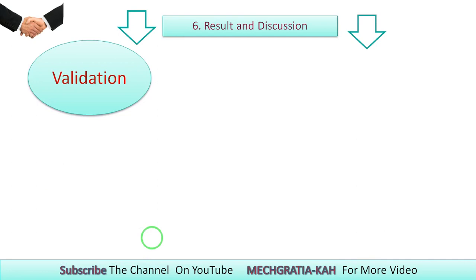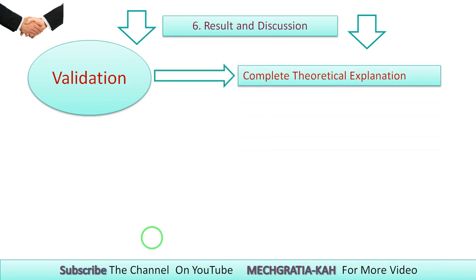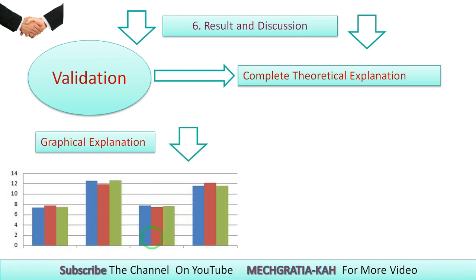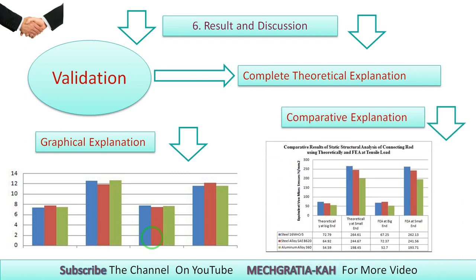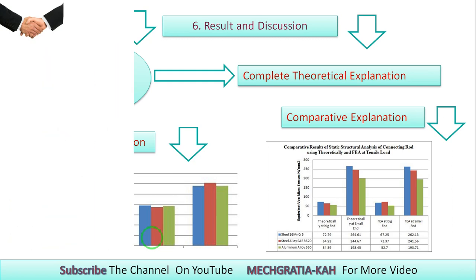Result and discussion is the most important topic. It is essentially the validation of your research paper. You will provide a complete theoretical explanation, and if you have done experimental research, you will explain your complete results, show what changes are observed, and give a graphical explanation comparing your results.